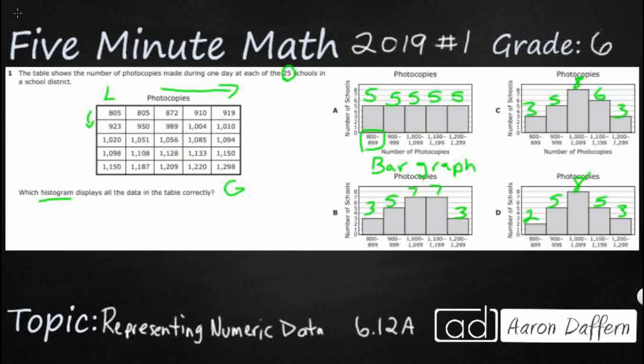Let's take a look at our options. What we need to do is make these buckets: 800 to 899, 900 to 999, 1000 to 1099, 1100 to 1199, and then 1200. Let's just make tally marks and see how we're doing.